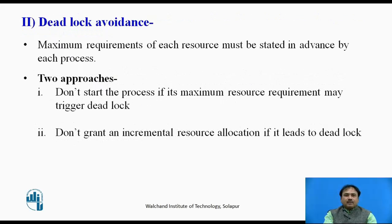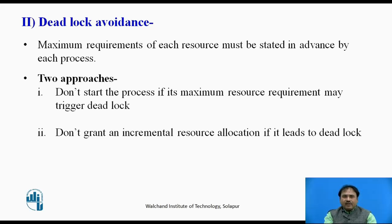Another deadlock handling method is deadlock avoidance. In this approach, the maximum resource requirements of each process are stated in advance. The system then confirms whether allocating those resources could lead to a deadlock. If 10 requested resources could create a deadlock, the OS will not allow that allocation. Additionally, the system does not grant incremental resource allocations that would lead to deadlock. In this way, we avoid deadlock occurrence.